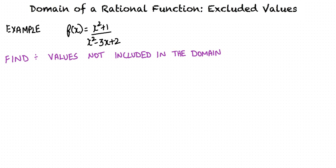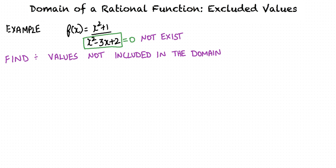Let us consider an example. Let's say we have a function f of x, and we are required to find the values that are not included in the domain of the function f. In other words, we are asked to find the excluded values in the domain of f of x. By definition, excluded values are the values for which the function will not exist. The function will not exist when the denominator becomes zero — specifically, when the quadratic expression in the denominator equals zero.